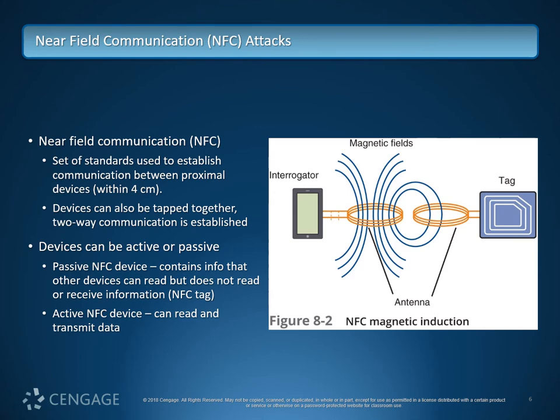Devices can either be passive or active. A passive device contains info that other devices can read, but does not read or receive information itself. RFID tags are very similar in that they have the ability to be read, but not necessarily receive information themselves — for example, a tracking tag or microchip for a pet. Active NFC devices are able to read and transmit data. The antennas are basically very thin coils of wire, and because only one device needs to be powered, the tags themselves can be very tiny.